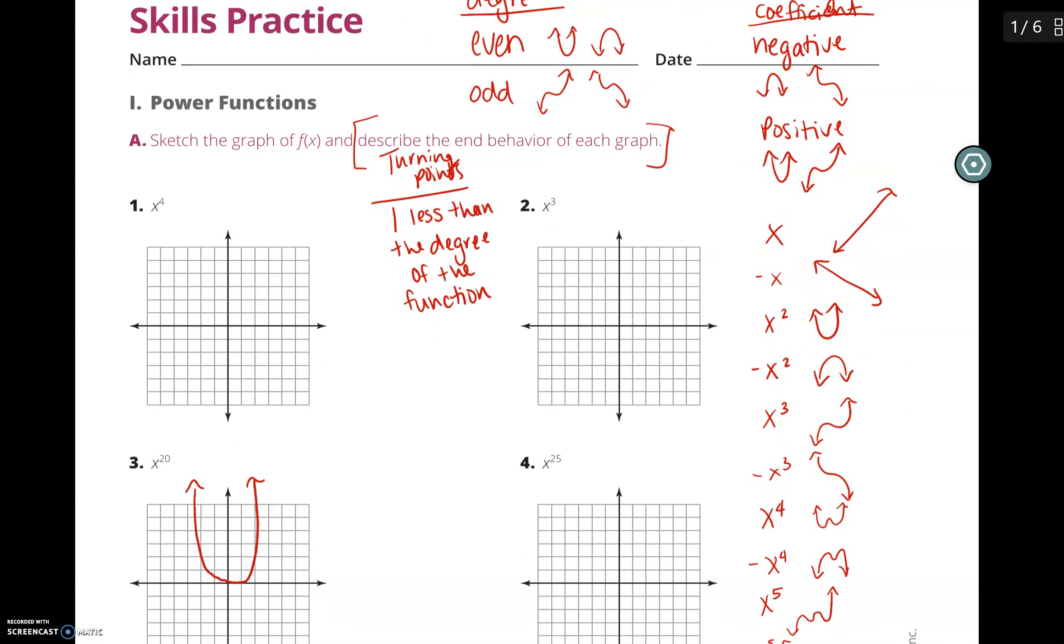Alright, if it is even and positive, the end behavior will be as x approaches negative infinity, y would approach positive infinity. As x would approach positive infinity, y will also approach positive infinity because the y values will be going up.